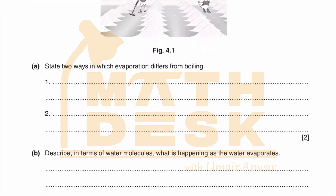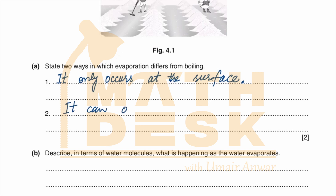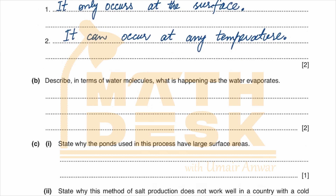State two ways in which evaporation differs from boiling. First, evaporation only occurs at the surface of the liquid, while boiling happens throughout the water. Second, evaporation can occur at any temperature, while boiling always occurs at the boiling point of the water.